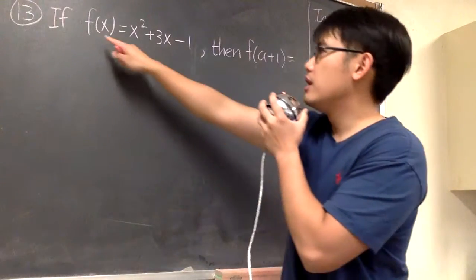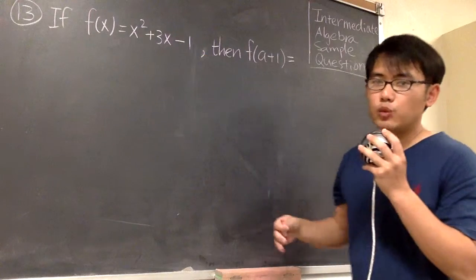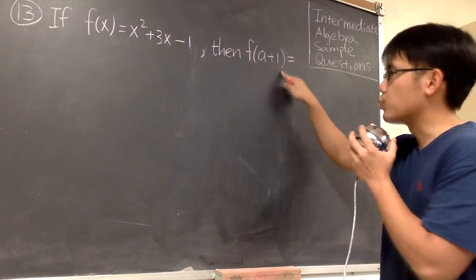For number 13, we are given the function f(x) = x² + 3x - 1, and then we are going to figure out an expression for f(a+1).